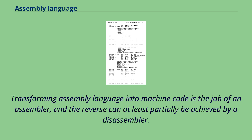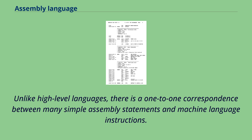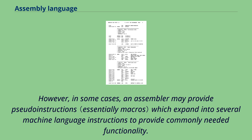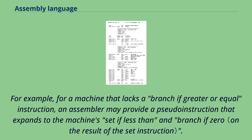Transforming assembly language into machine code is the job of an assembler, and the reverse can at least partially be achieved by a disassembler. Unlike high-level languages, there is a one-to-one correspondence between many simple assembly statements and machine language instructions. However, in some cases, an assembler may provide pseudo-instructions which expand into several machine language instructions to provide commonly needed functionality. For example, for a machine that lacks a branch-if-greater-or-equal instruction, an assembler may provide a pseudo-instruction that expands to the machine's set-if-less-than and branch-if-zero.